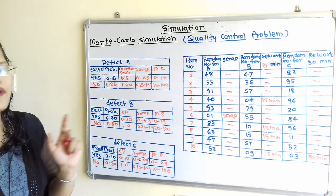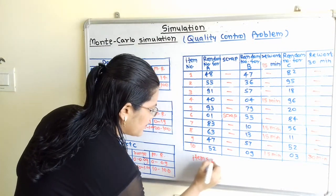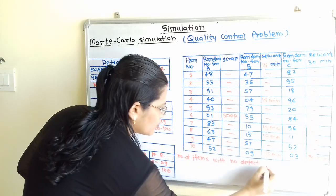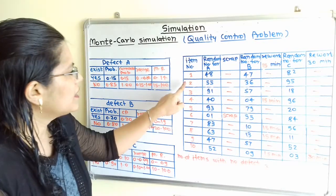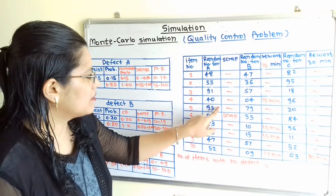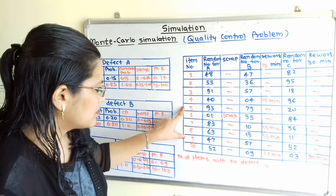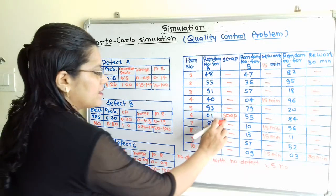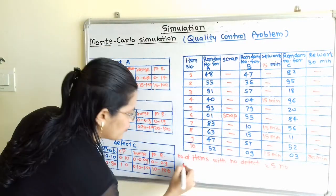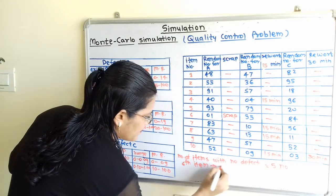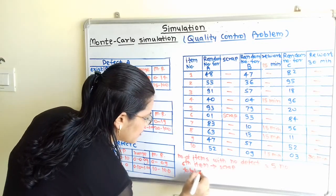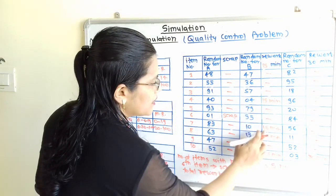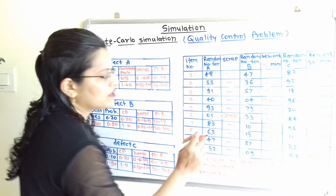From this we can conclude: number of items with no defect — item 1, 2, 3, 4, and 5 — total 5 items with no defect. One item, the 6th, goes to scrap due to defect A. Total rework time: 15 minutes plus 15 minutes plus 15 minutes plus 15 minutes from defect B equals 60 minutes, plus 30 minutes from defect C equals 90 minutes total rework time.